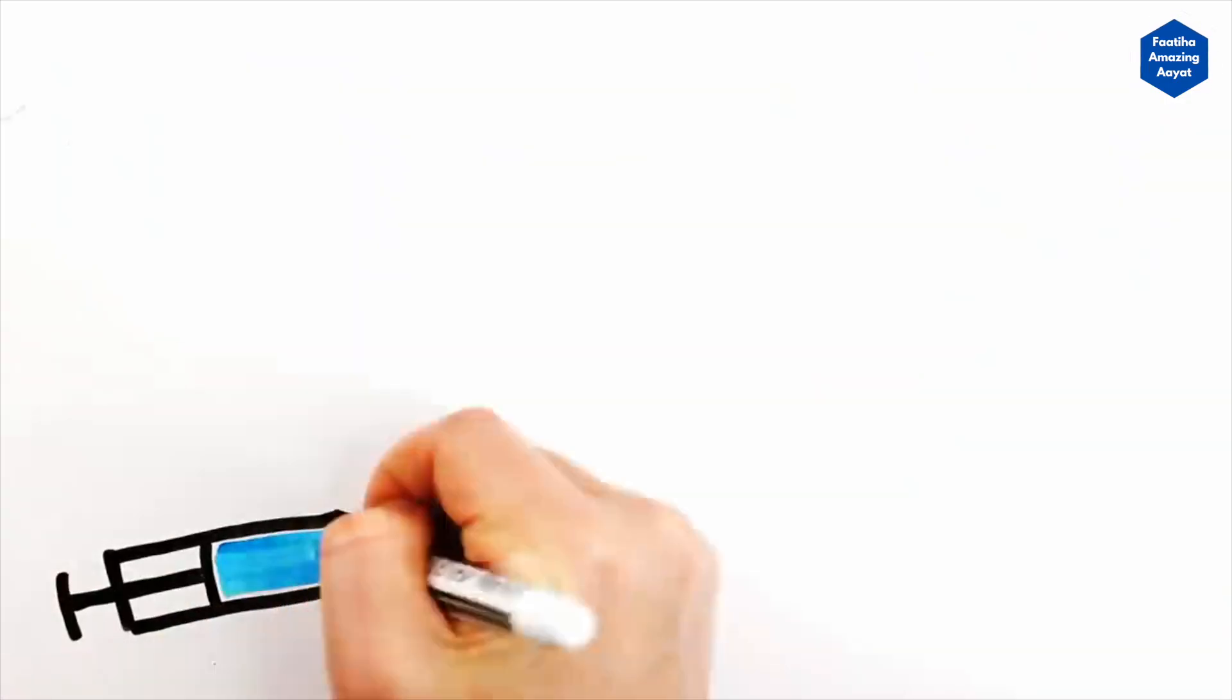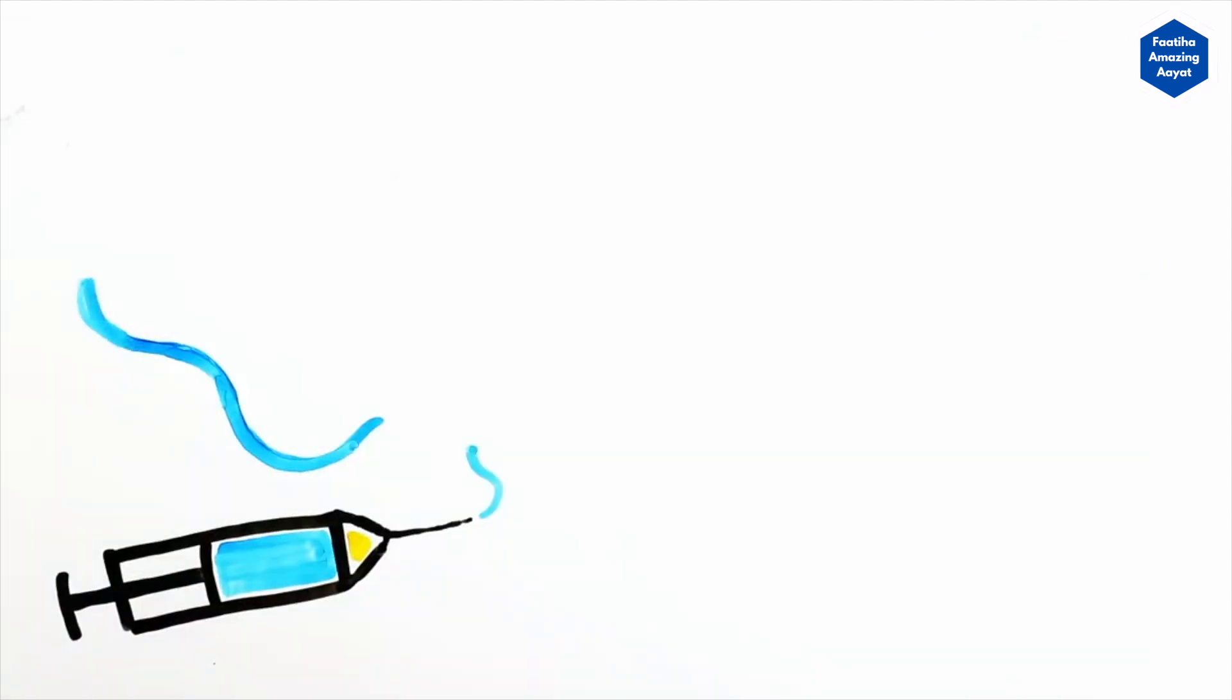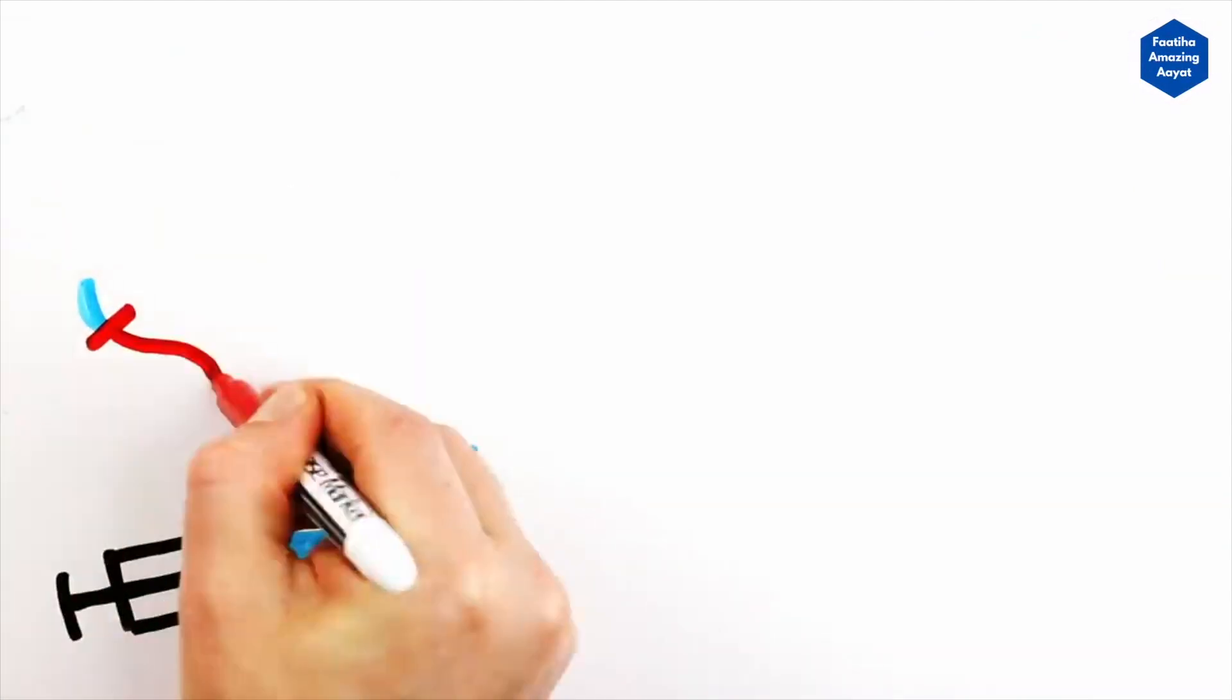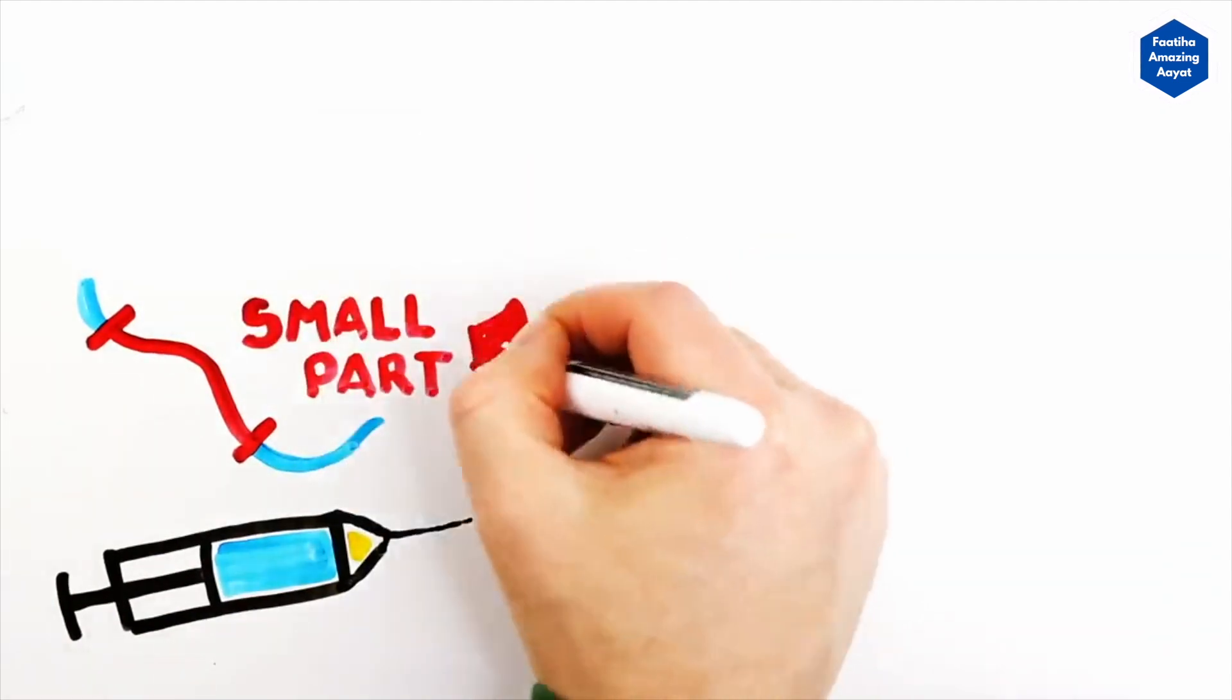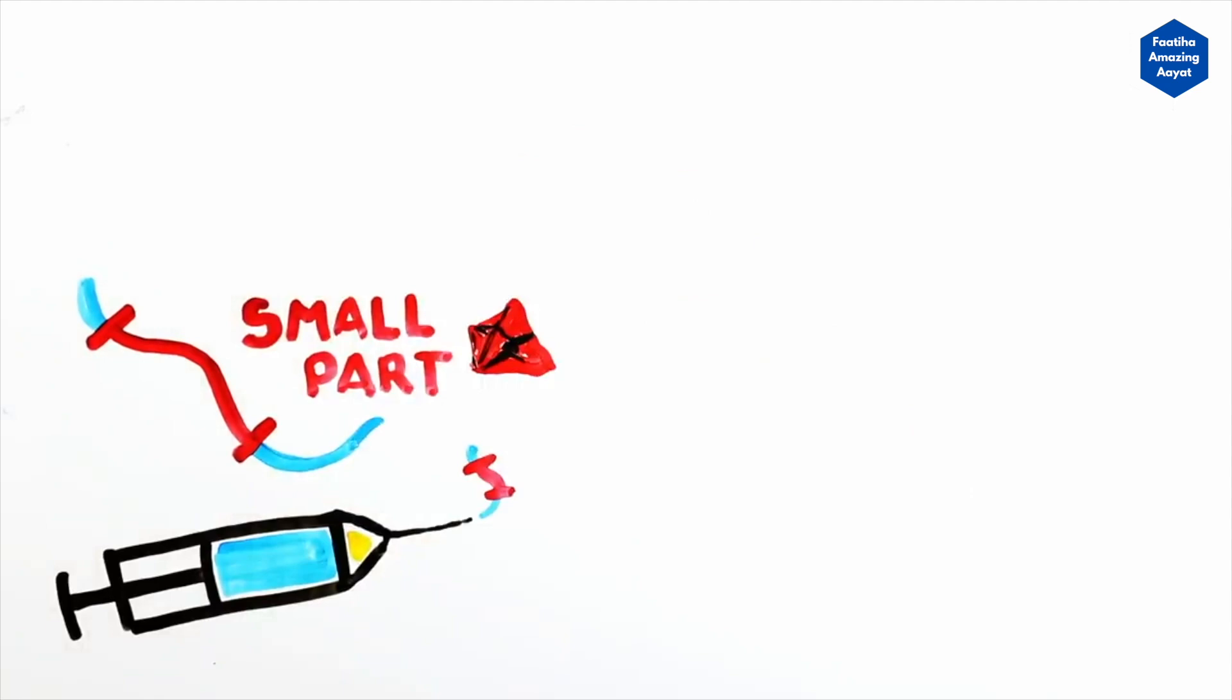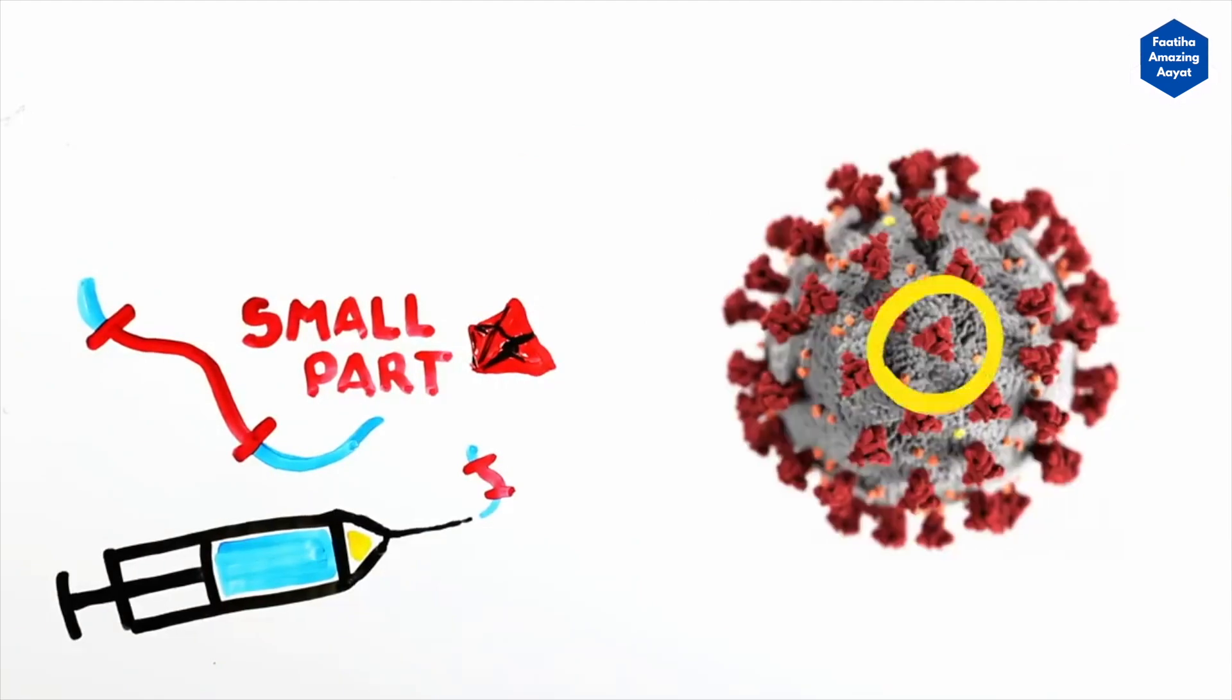So, when mRNA is being injected into you from the vaccine, that also carries genetic instruction, but in this case, it is only coding for one small part of a virus instead of the whole thing. You have probably seen that COVID-19 represents like this, with the spikes on it.